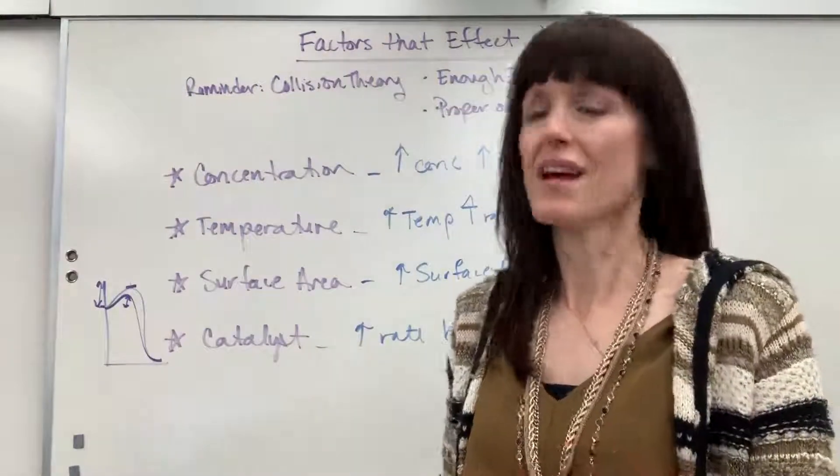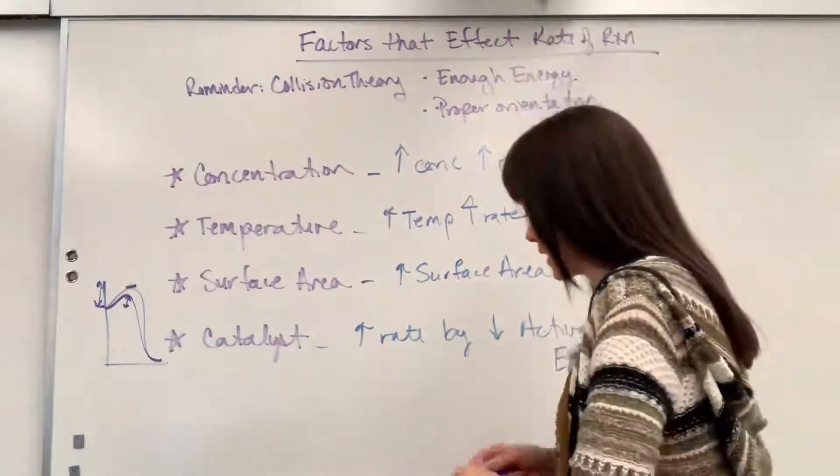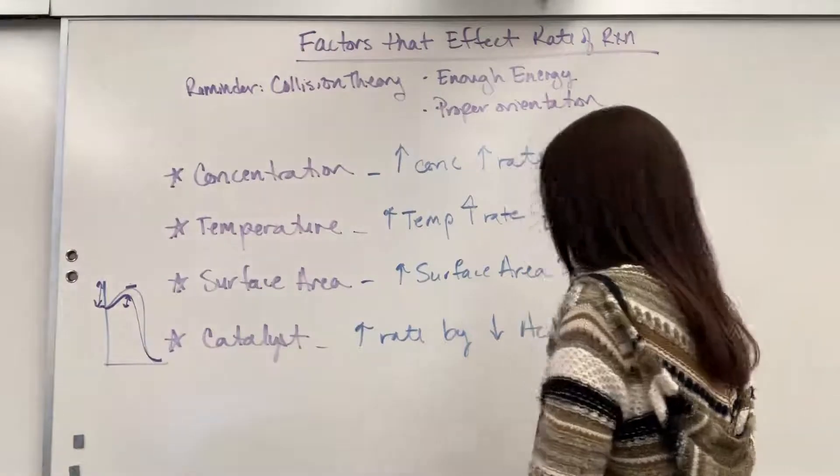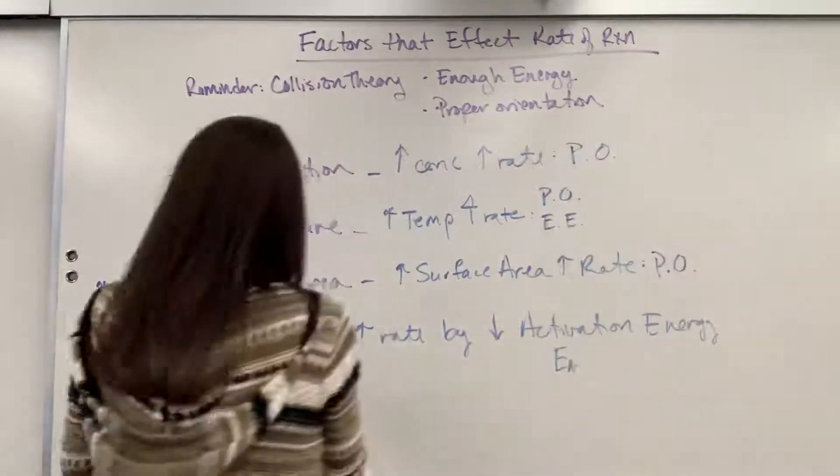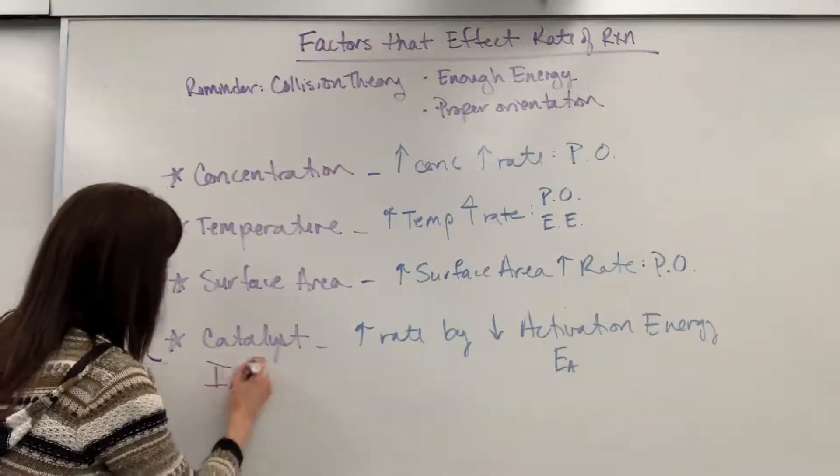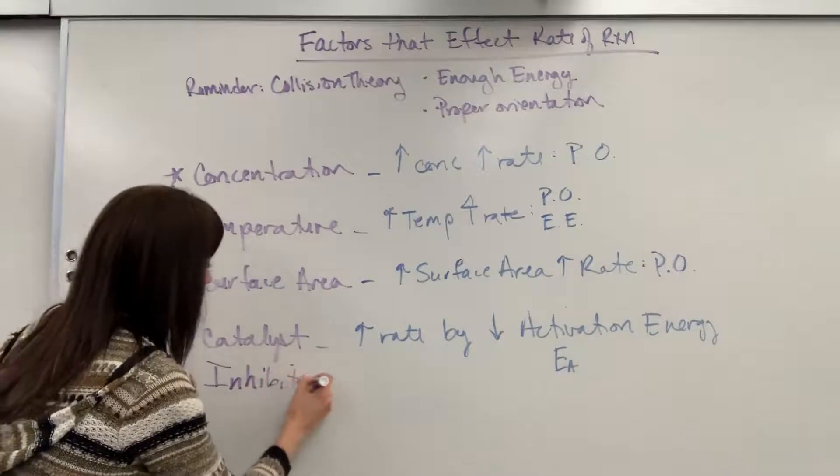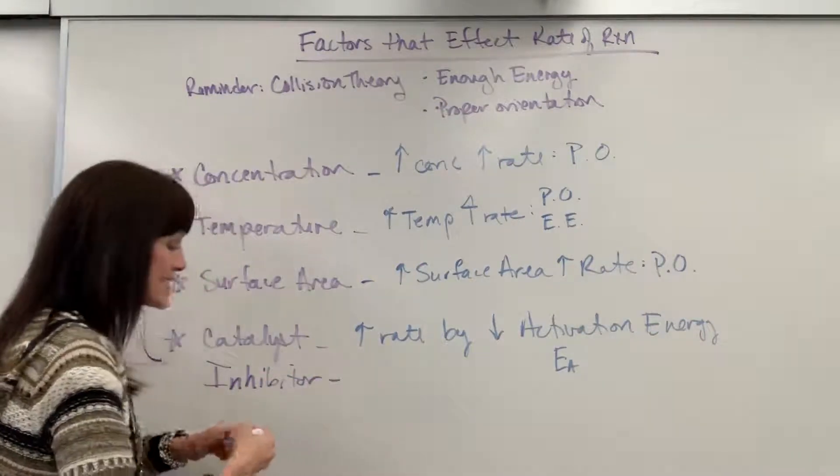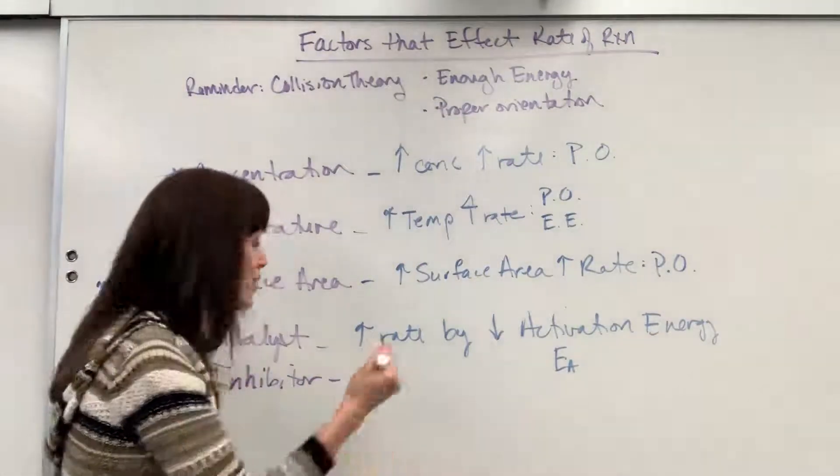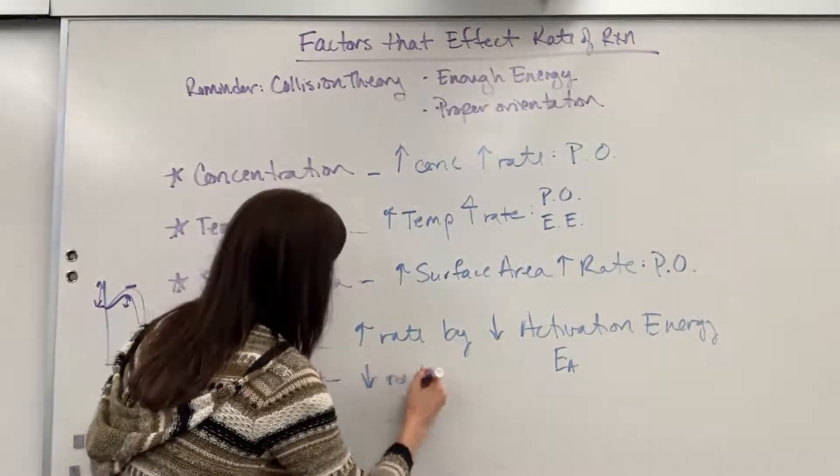Now, just in case you see this, we also have what are called inhibitors. And they fall in the same category. So an inhibitor, this is going to be something that decreases the rate. So it's going to go slower. And can you guess the finish, the ending? It decreases the rate by, you got it, increasing the activation energy.